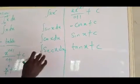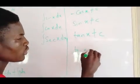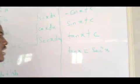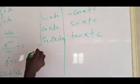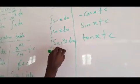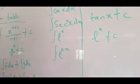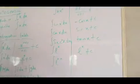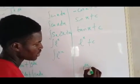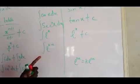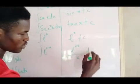Now if you differentiate tan(x) you get sec²(x), so that means if you integrate sec²(x) you will get tan(x). Also, if you integrate e^x you get e^x plus C. And if you integrate e^(kx) dx, because integration deals with division while differentiation deals with multiplication, the answer is e^(kx) over k plus C.